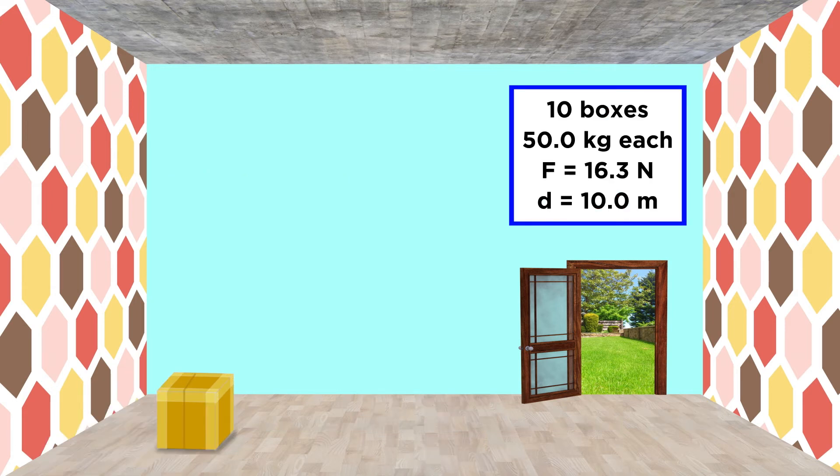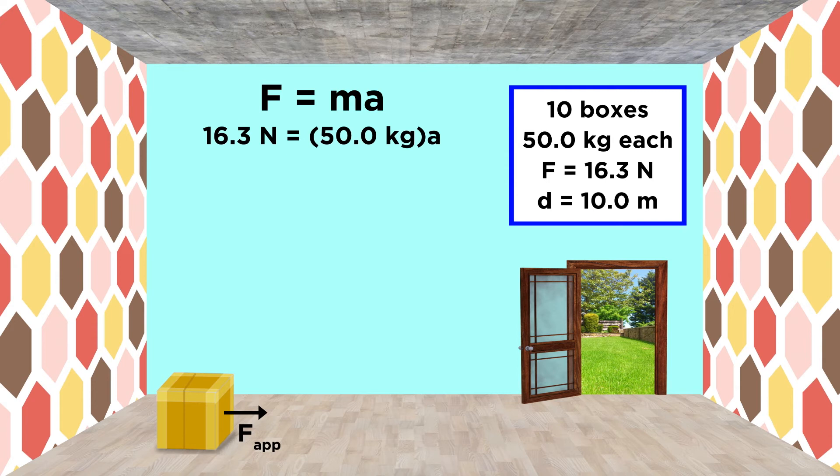In this problem, we are trying to figure out how much time is required to perform a certain task on the basis of some force we are producing. Therefore, the best thing to do is to use Newton's second law of motion, F equals ma. This will allow us to plug in the force exerted, as well as the mass of the box.